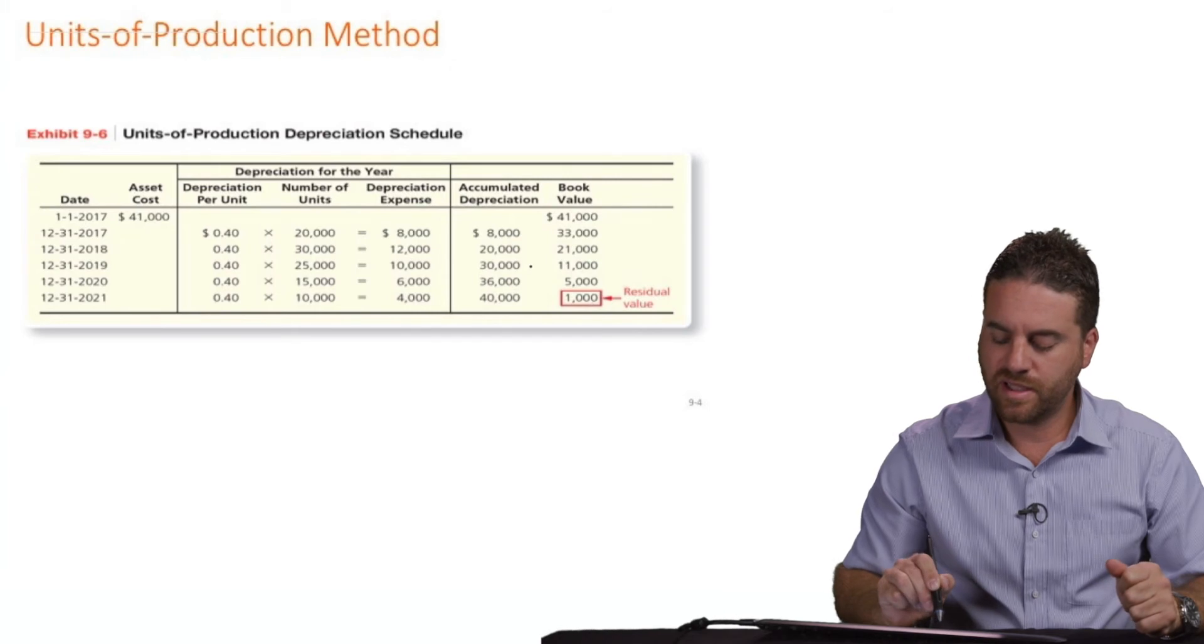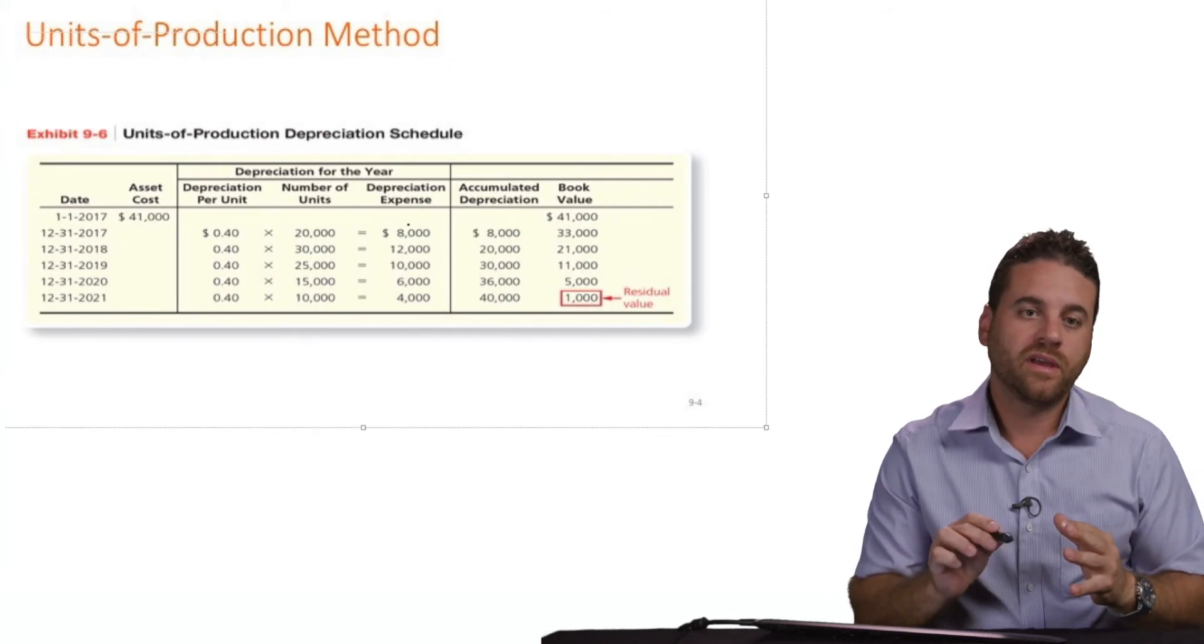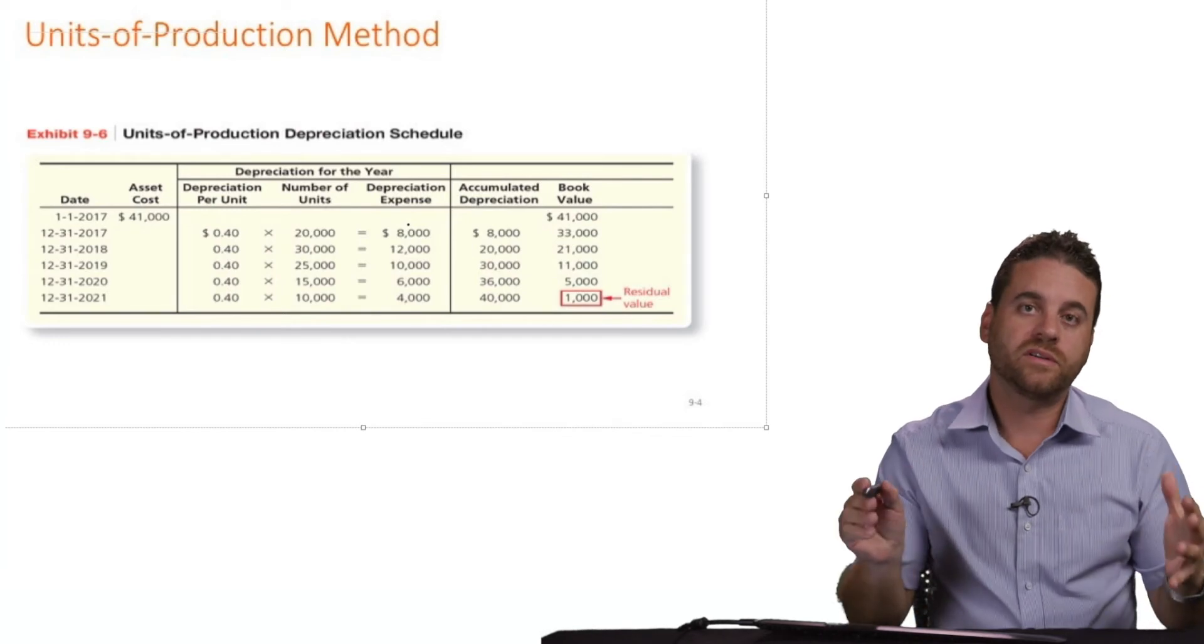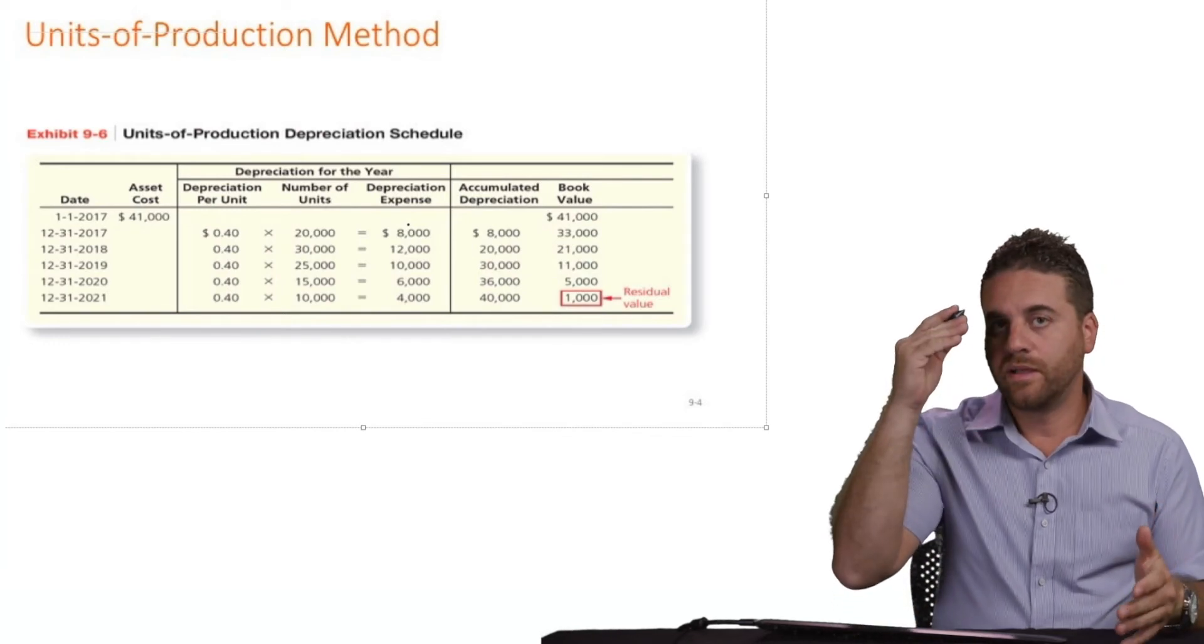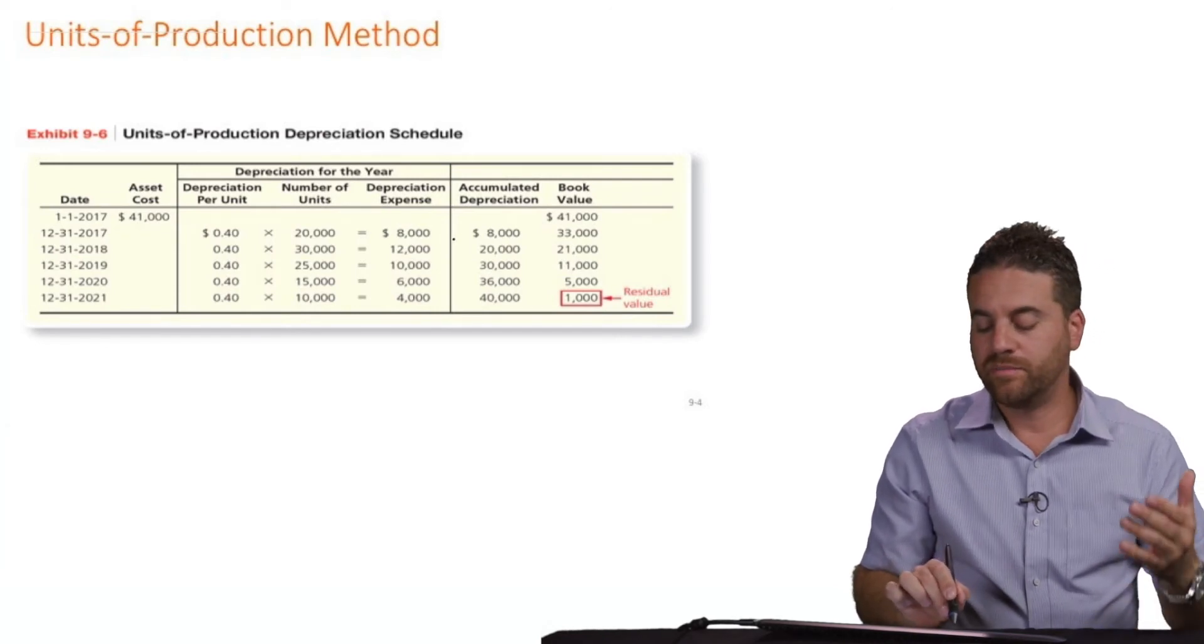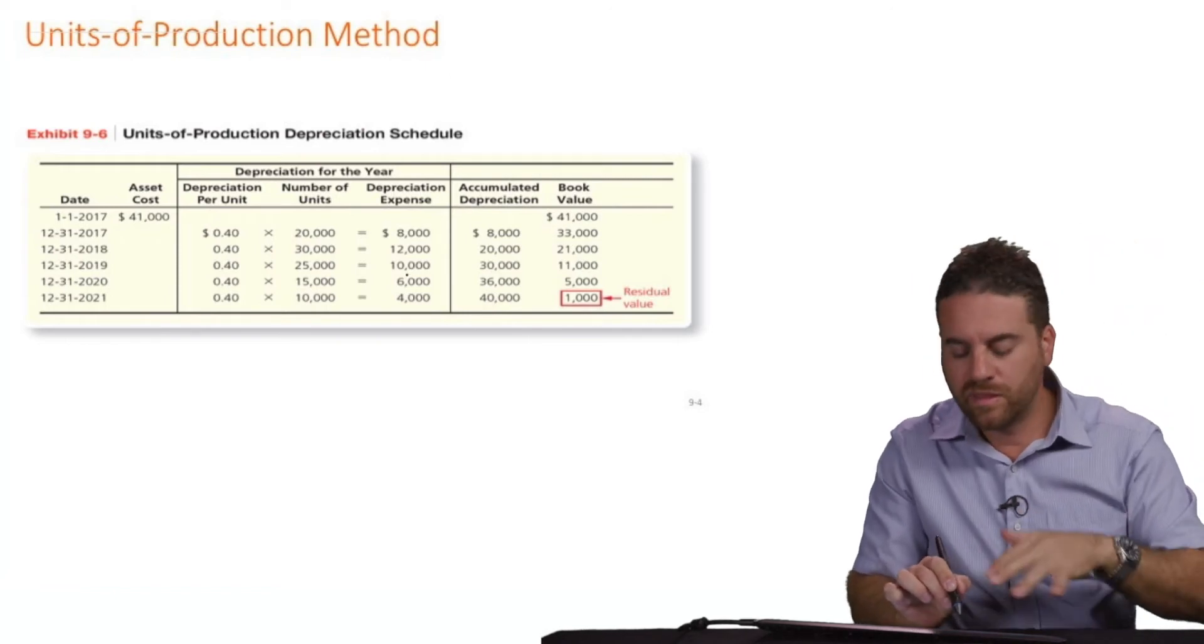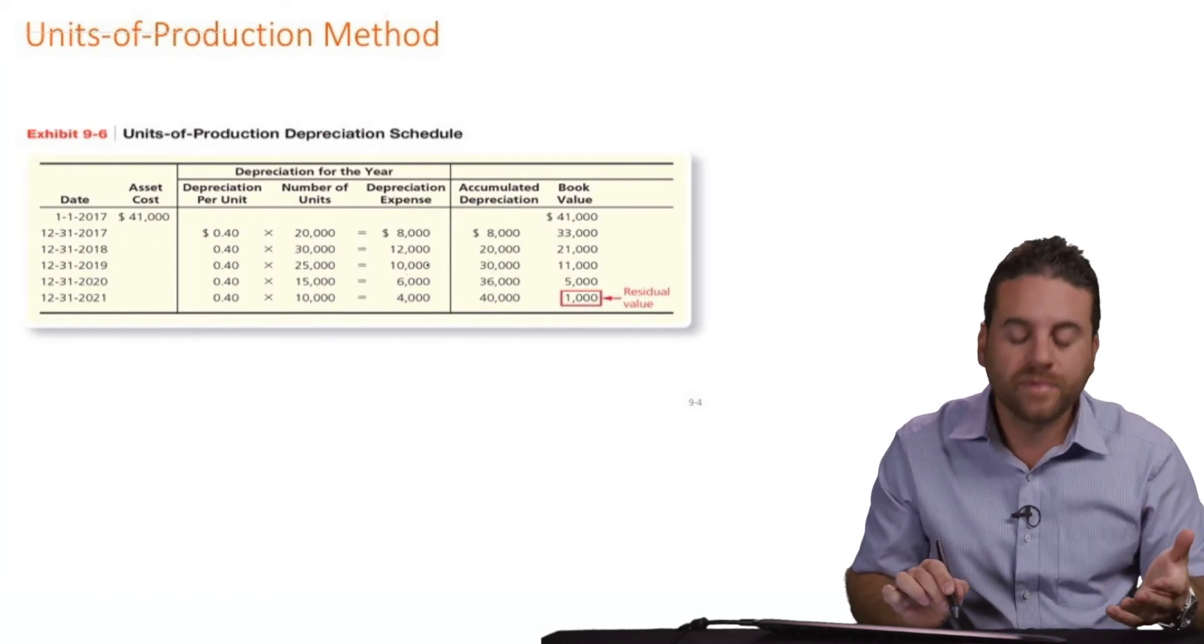The main difference is how we distributed the $40,000 depreciation over the five years. Did we distribute them equally 8, 8, 8, 8, 8? Or we use a different method of calculation, which end up being 8 and then 12 and then 10 and then 6 and then 4. The total is still 40,000.